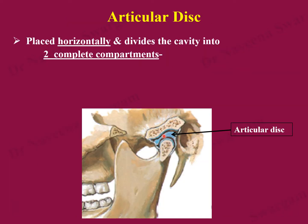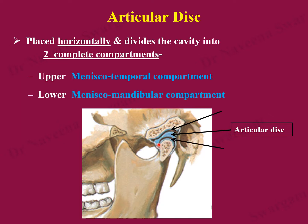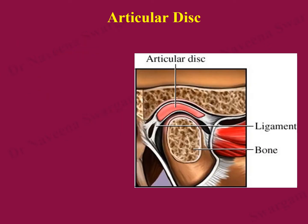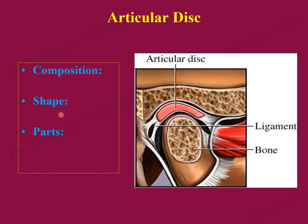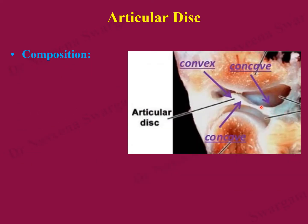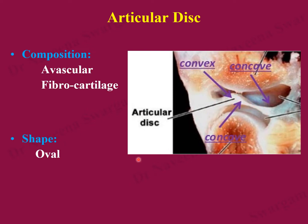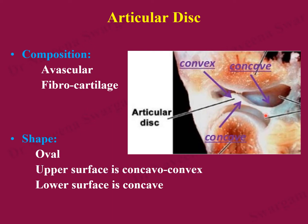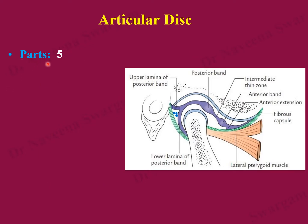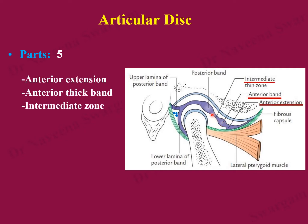The articular disc is placed horizontally within the joint cavity and divides it into two complete compartments: the upper meniscotemporal compartment and the lower meniscomandibular compartment. The disc is composed of fibrocartilage, which is avascular. It is oval in shape and shows an upper concave or convex surface and a lower concave surface. Structurally, the disc shows five parts from anterior to posterior: anterior extension, anterior thick band, intermediate thin zone, posterior thick band, and bilamellar region.